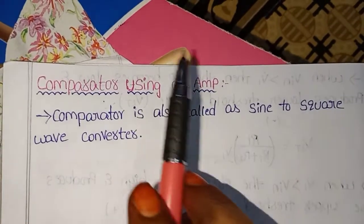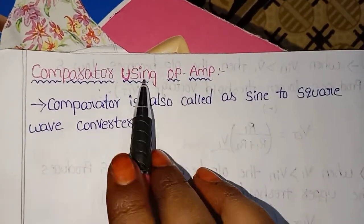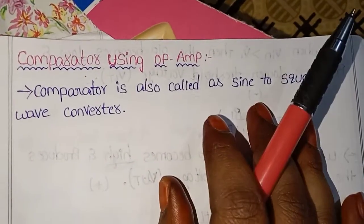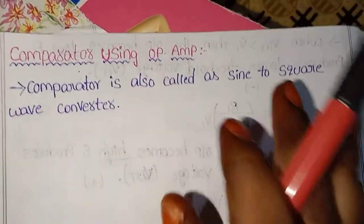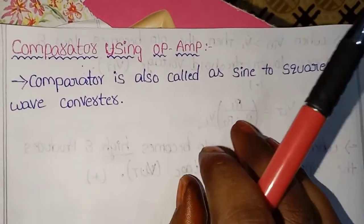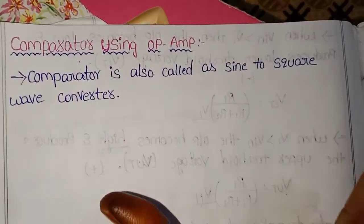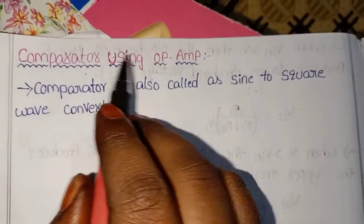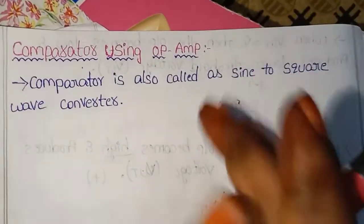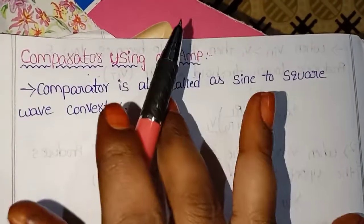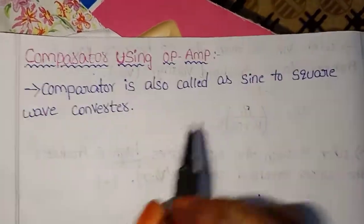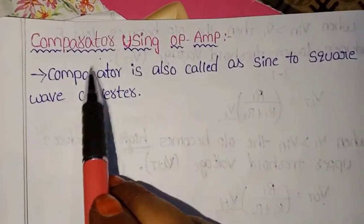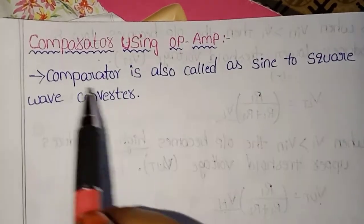Hello friends, today's topic is comparator using op-amp. In this video, we will start with comparator and waveforms. The comparator is also called a sine-to-square wave converter.